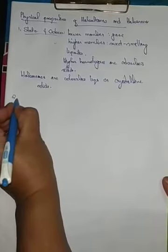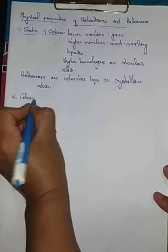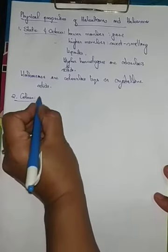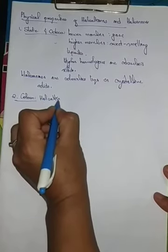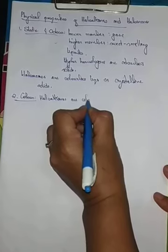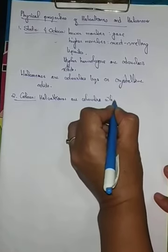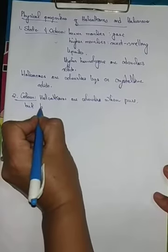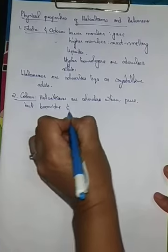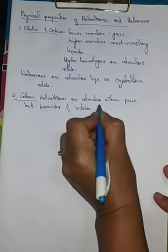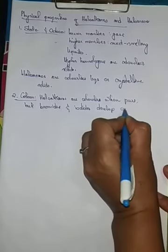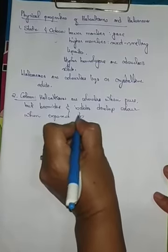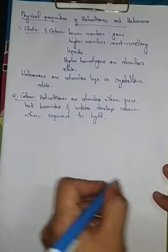Number two: the color. The color of haloalkanes and haloarenes — the haloalkanes or alkyl halides — are colorless. But bromides and iodides develop color when exposed to light.